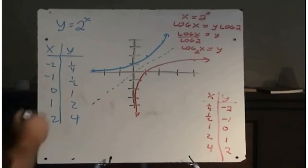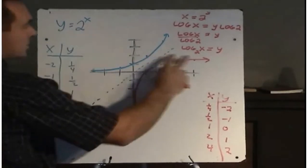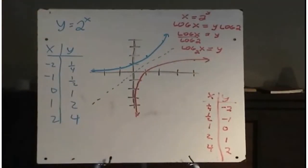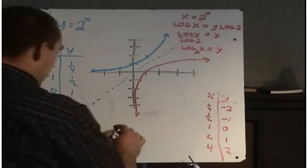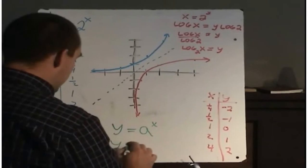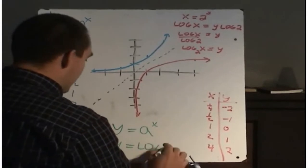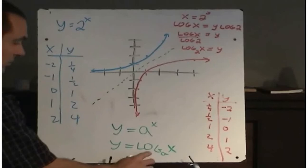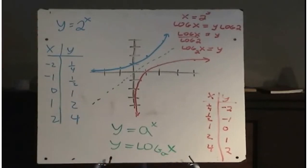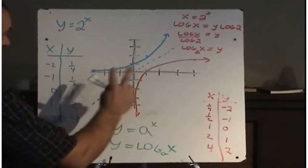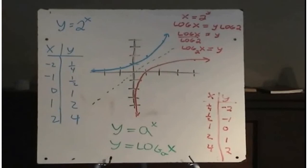So the exponential function y equals 2 to the power of x and the logarithmic function y equals log base 2 of x are inverses of each other. That's a really important concept. If you have y equals a to the power of x, then the inverse of that function would be log base a of x. So whatever this number is — y equals a to the x — the equation of the inverse is log base a of x, meaning all the x and y values have been switched from the exponential graph.